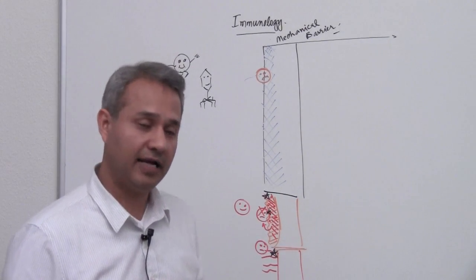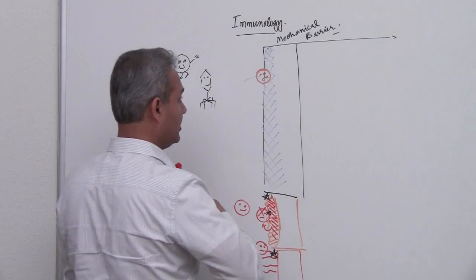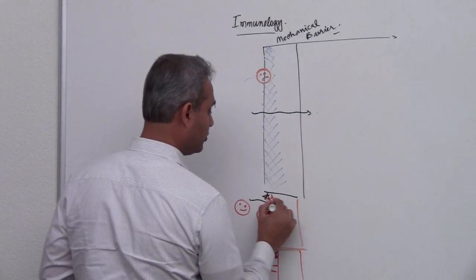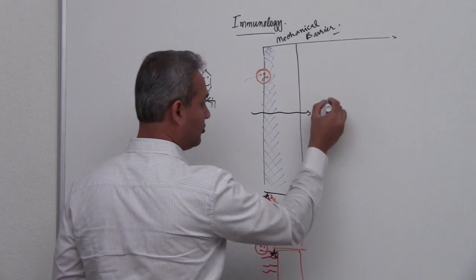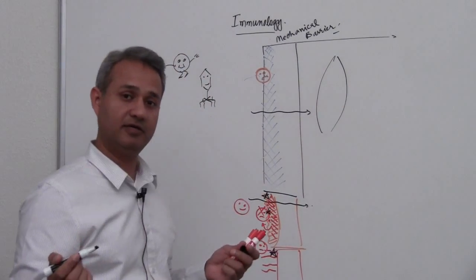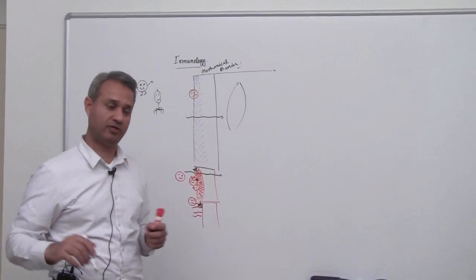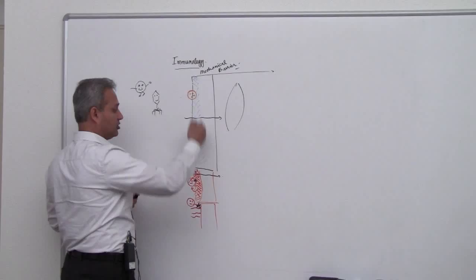What does the microorganism want at the end of the day? It wants to breach through our skin or mucous membranes, enter our body tissue, circulate in the tissue and thrive there. We are trying to prevent that.